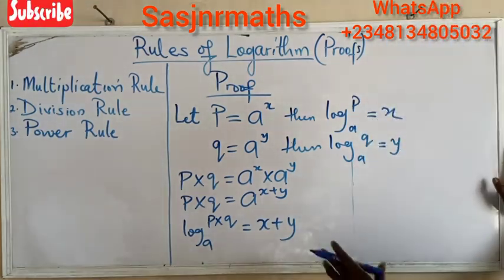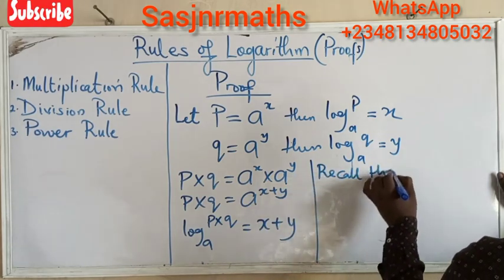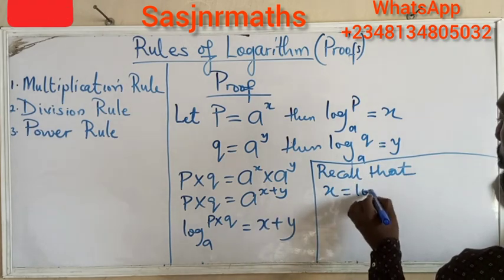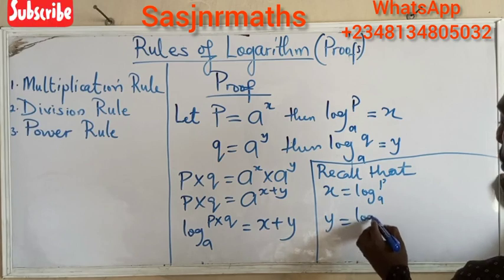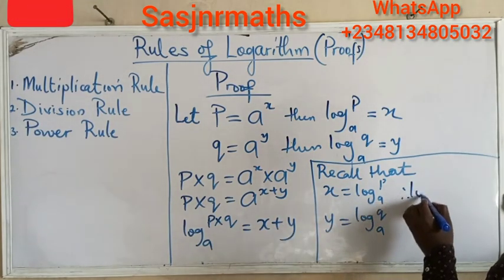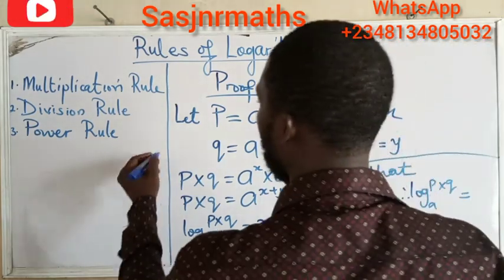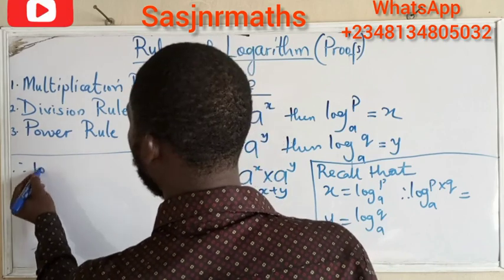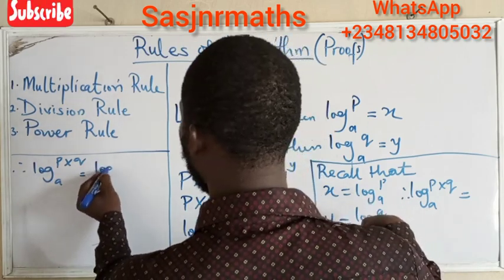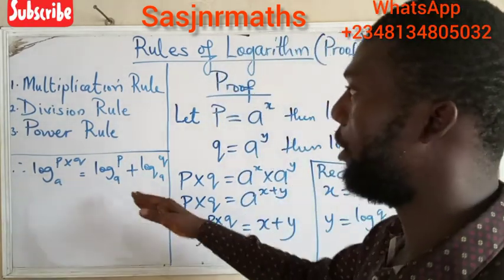From here, we recall that x equals log base a of p, and y equals log base a of q. So to round everything up: therefore, log base a of (p times q) equals log base a of p plus log base a of q. And we have proven the multiplication rule.